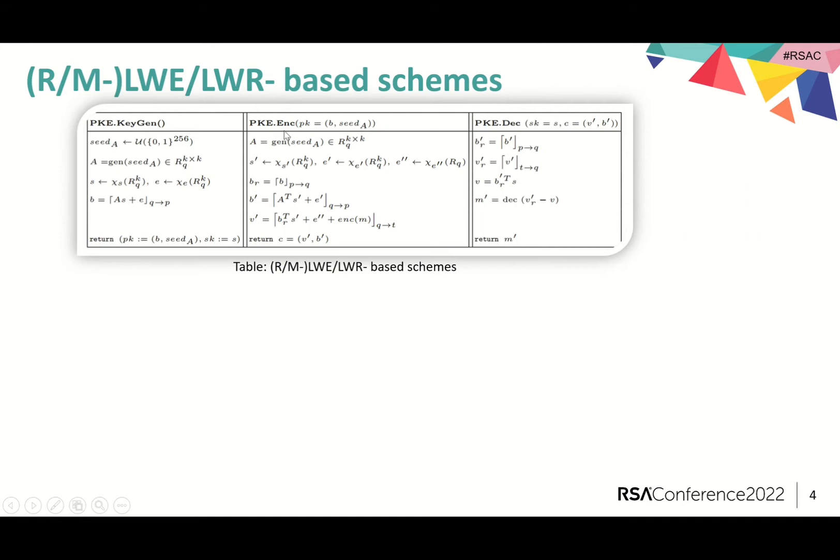Given the public B and the seed to generate A, for a message M, the encryption process also consists of two steps. The first one is to sample out the secret S' and errors E', E''. The second step is to calculate the ciphertexts B' and V'.